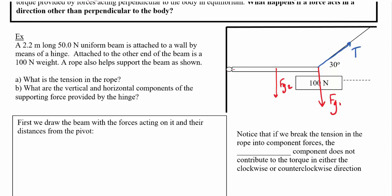This isn't the full story because there could also be forces acting at my pivot. I suspect the y-force might be upward — we'll verify that later. Looking at the x-direction, the tension is pulling the beam off the wall, so there would be an x-component of force to the left.